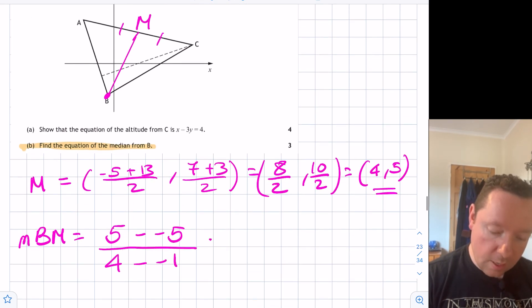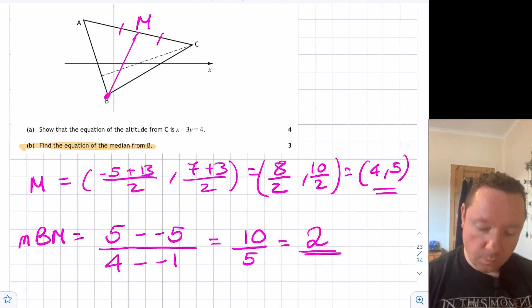So minus 1. 5 minus negative 5 is 10. 4 minus negative 1 is 5. So our gradient is a nice round number of 2. We've now got a gradient and a point.